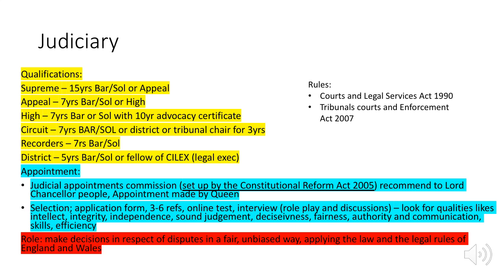For appointment, the Judicial Appointments Commission was set up by the Constitutional Reform Act 2005. They recommend people to the Lord Chancellor, and the appointment is eventually made by the Queen. For selection, you must complete an application form and provide three to six references. There will be an online test and an interview including role-playing discussions. They look for qualities like intellect, integrity, independence, sound judgement, decisiveness, fairness, authority, communication skills, and efficiency — you don't have to remember all of those, just a few will do. Their role is to make decisions in respect of disputes in a fair, unbiased way, applying the law and legal rules of England and Wales. These rules are contained in the Courts and Legal Services Act 1990 and the Tribunals, Courts and Enforcement Act 2007.